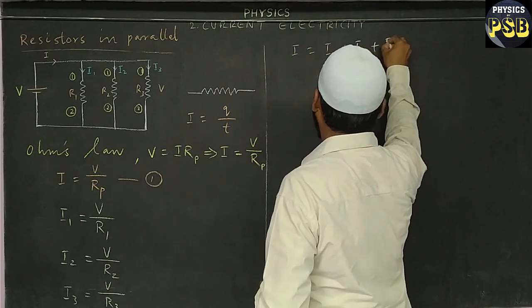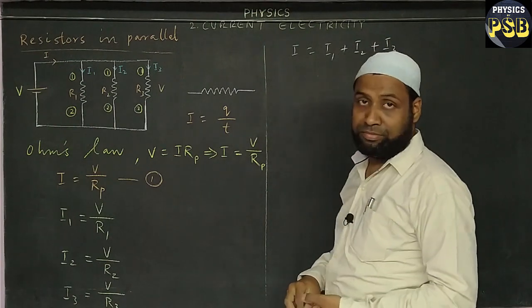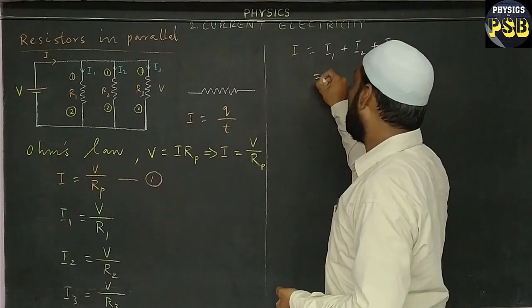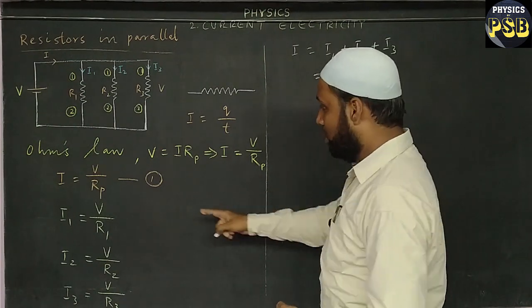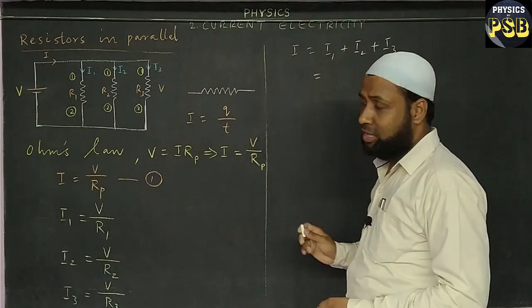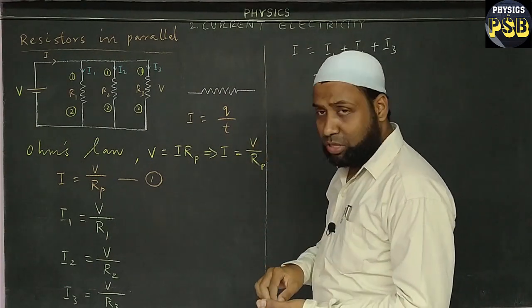And here total current in the circuit can be obtained by adding I1, I2, and I3. We know the values of I, I1, I2, and I3 from these four equations. Let me substitute the values.